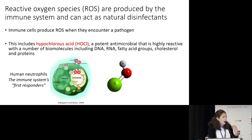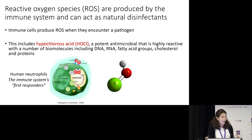become activated, and produce these ROS disinfectants to kill that invader. These ROS species include a compound known as hypochlorous acid, which is a highly potent antimicrobial due to its high reactivity with any number of biomolecules.